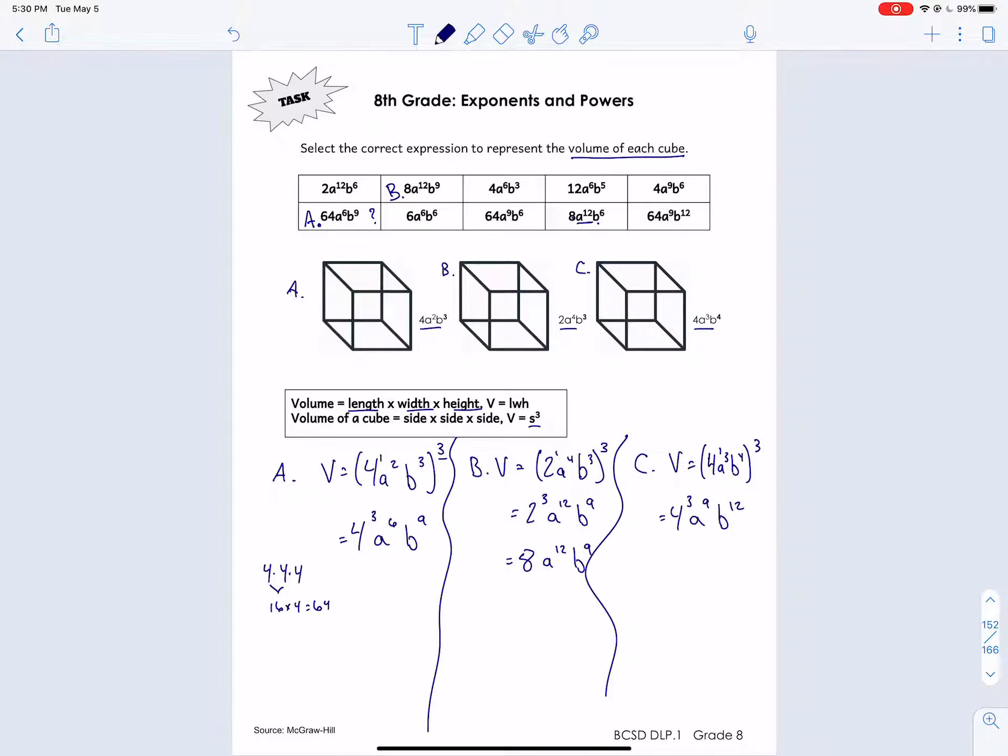Again, 4 to the 3rd we did that over here for A, and that was 64, right? 64 A to the 6th B to the 9th. Okay, so same thing over here. So 64 A to the 9th B to the 12th. Let's see what we have. 64 A to the 9th B to the 12th. So that's this one, C. So just to show this, that goes with that, these two, and then finally that one with that one.